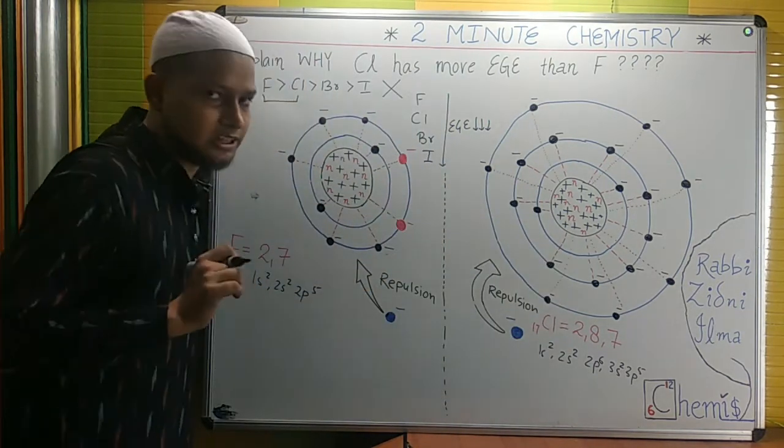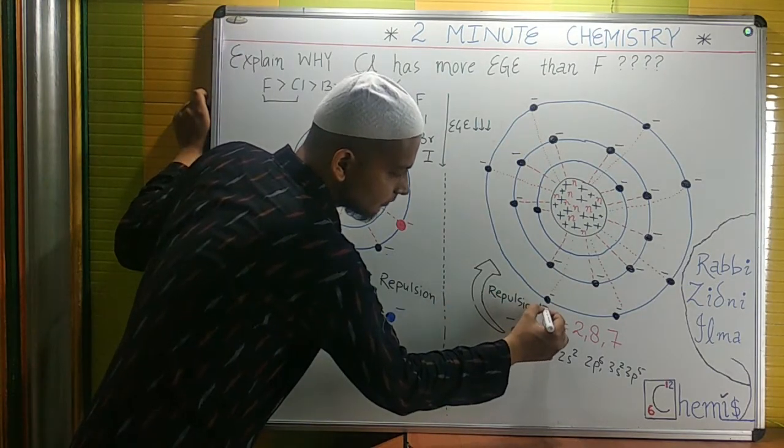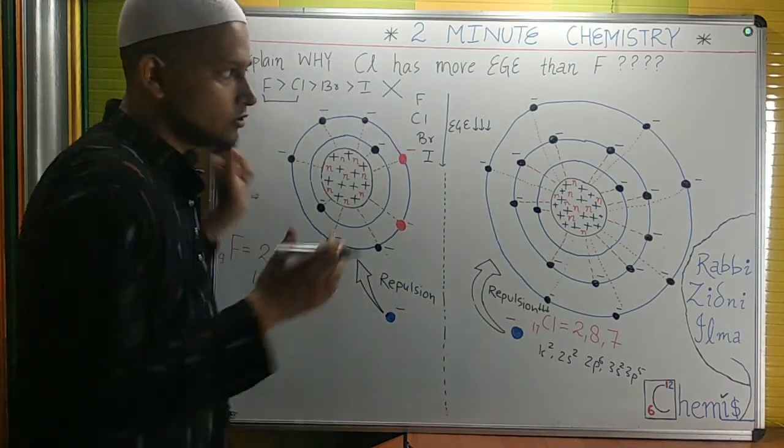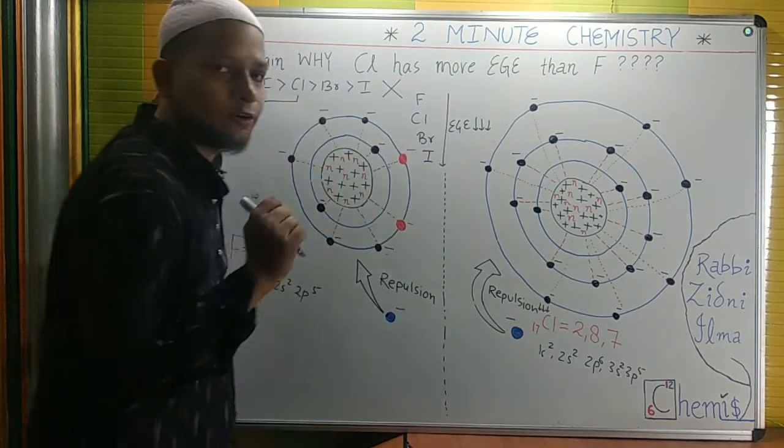But if you consider repulsion, the repulsion in this case is a bit less. Why less? Because chlorine has a bigger size, so it can accommodate this electron easily.